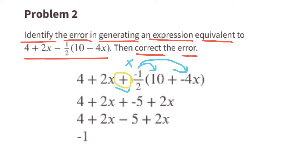Negative half of 10 is negative 5 because a negative times a positive is a negative. Negative half of negative 4x is a positive 2x because a negative times a negative is a positive. We can rewrite plus negative 5 as minus 5, so the expression now reads 4 plus 2x minus 5 plus 2x.